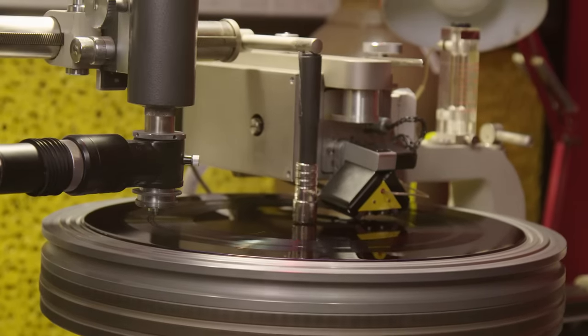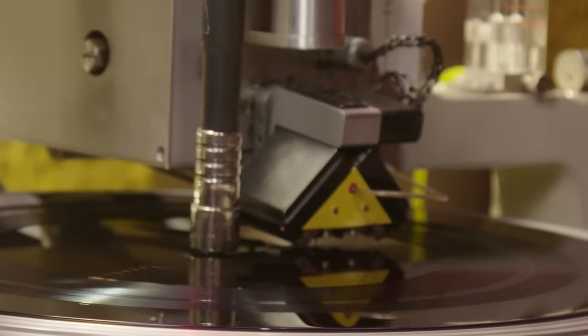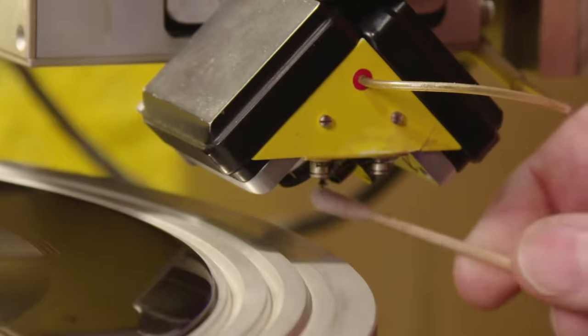So the record is finished. It goes around twice, makes a lock groove, and pops up. And you wheel it over here, and clean it immediately.